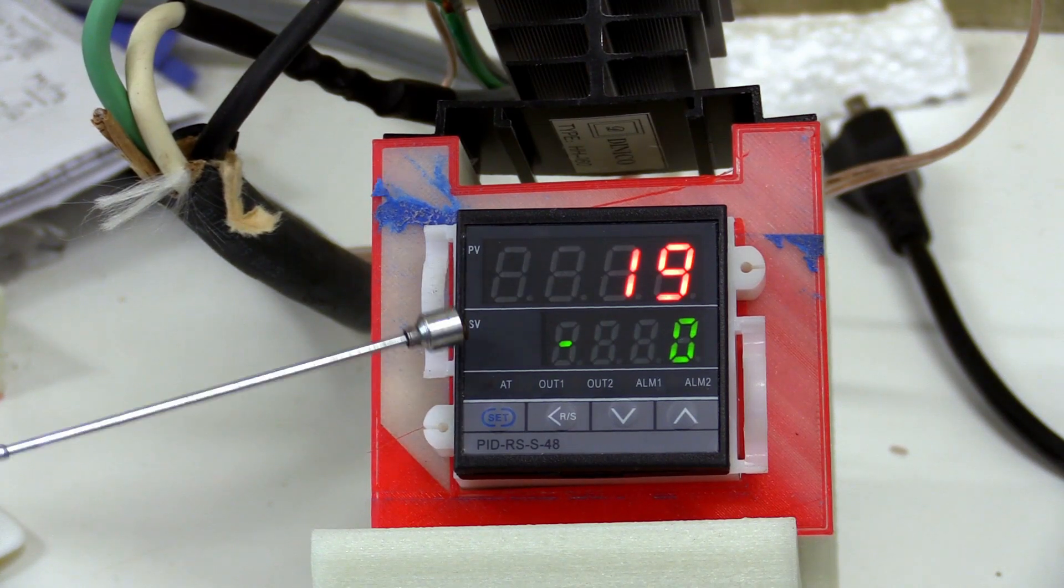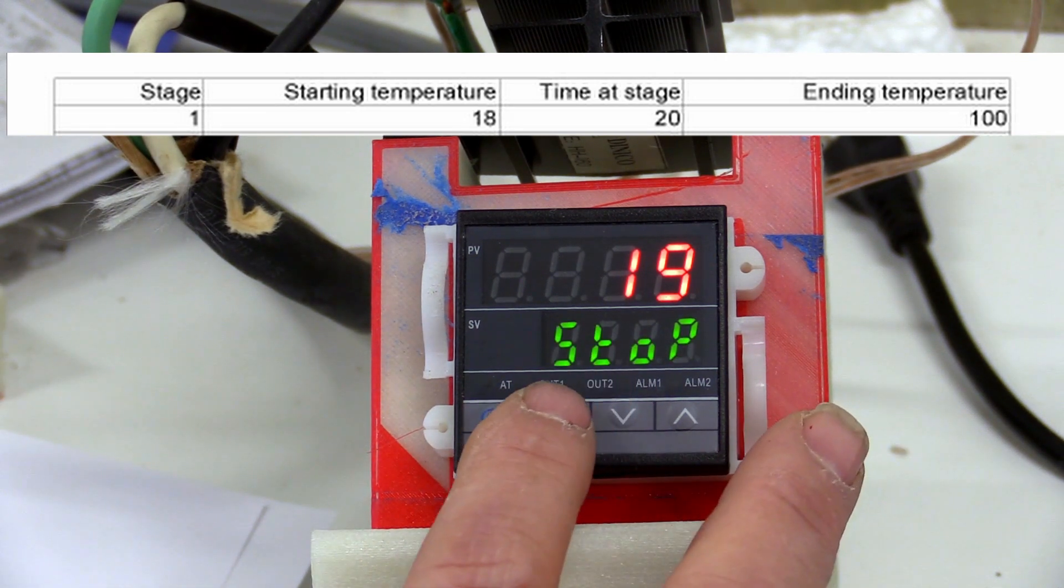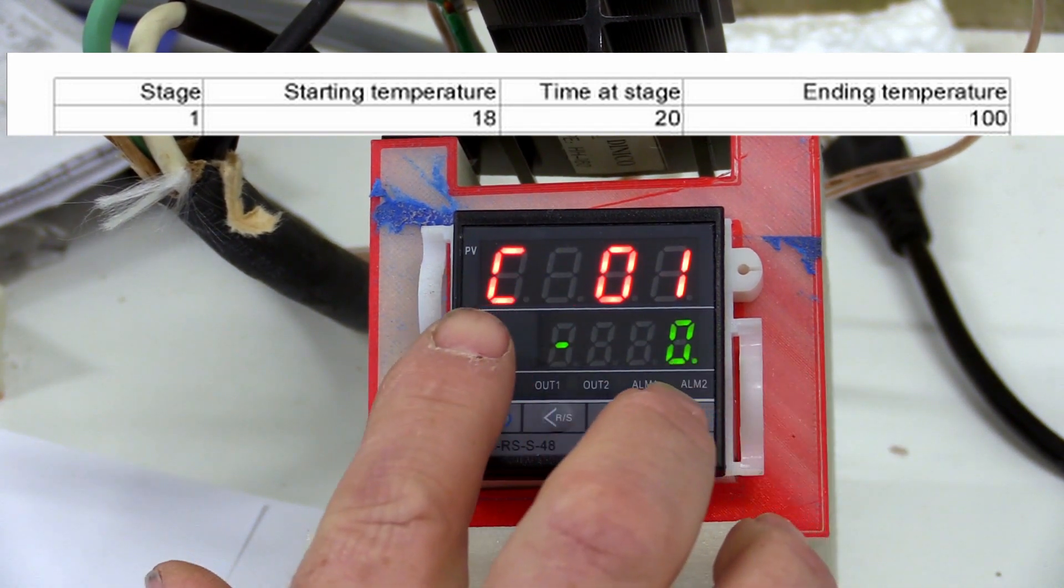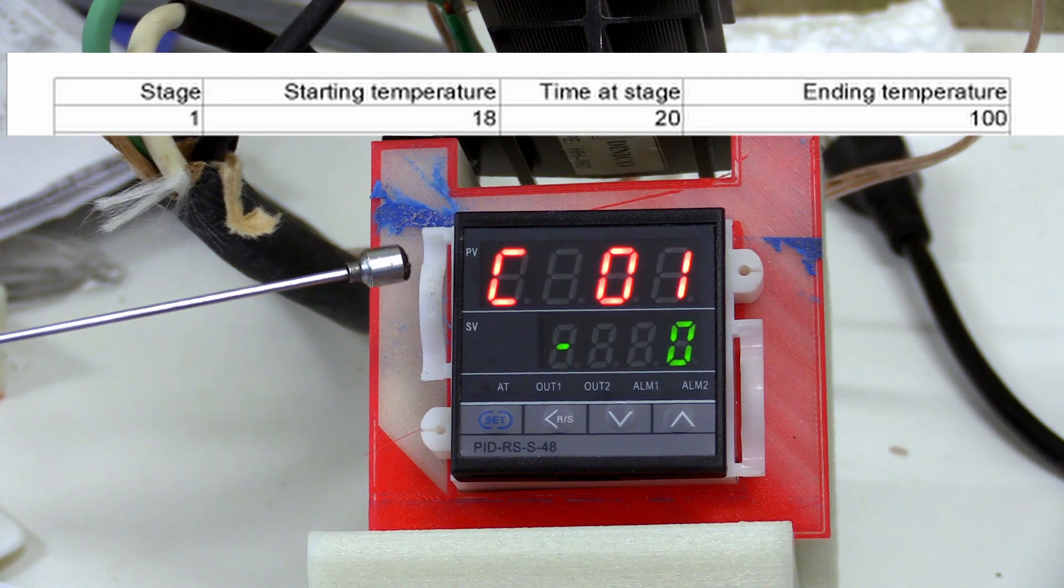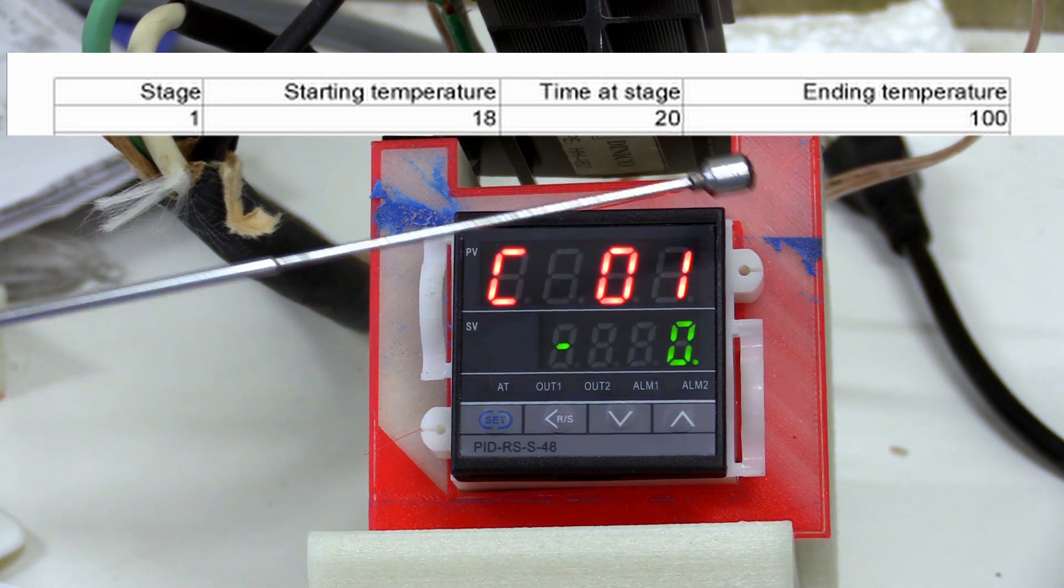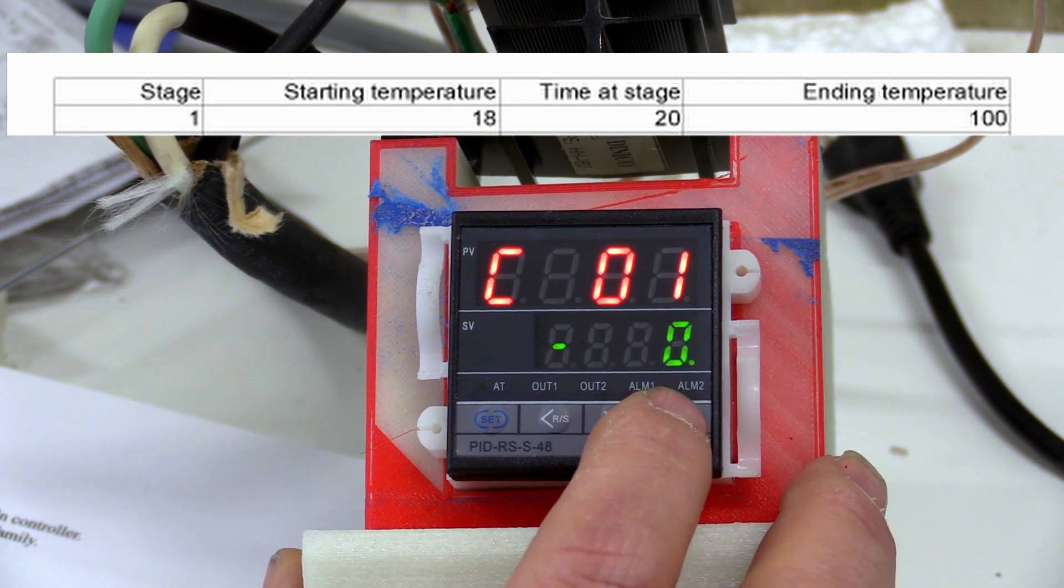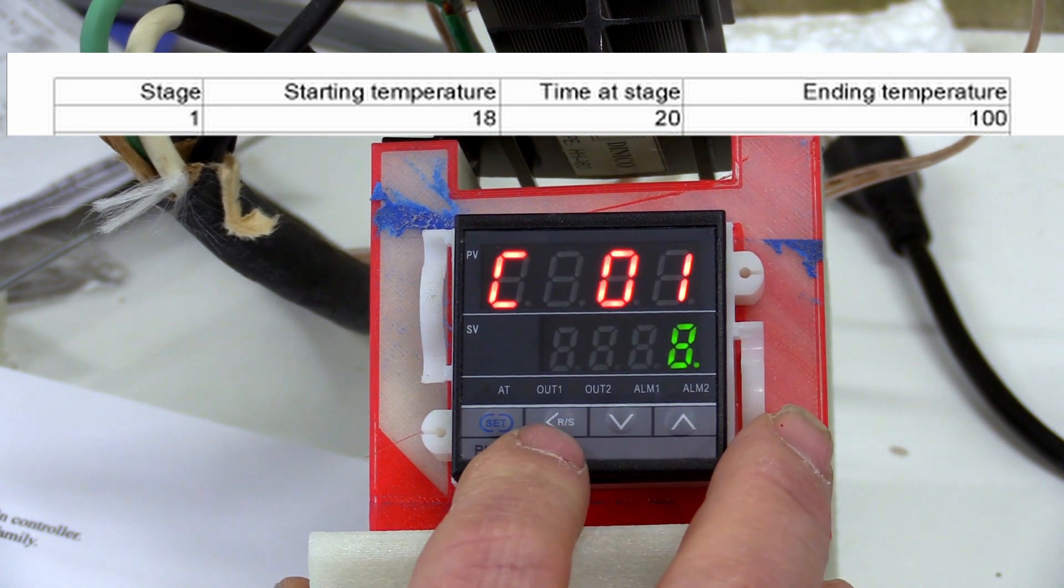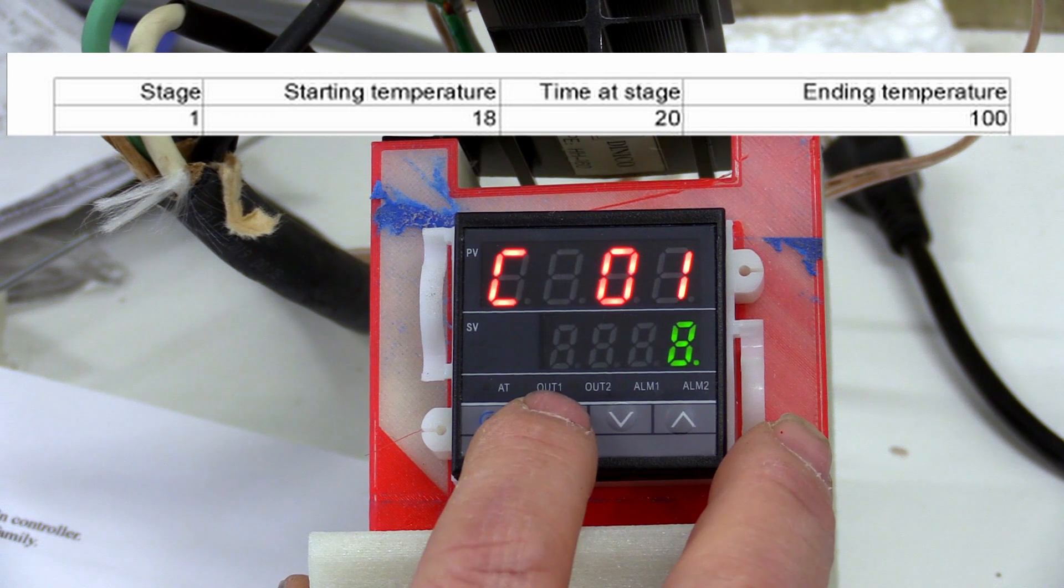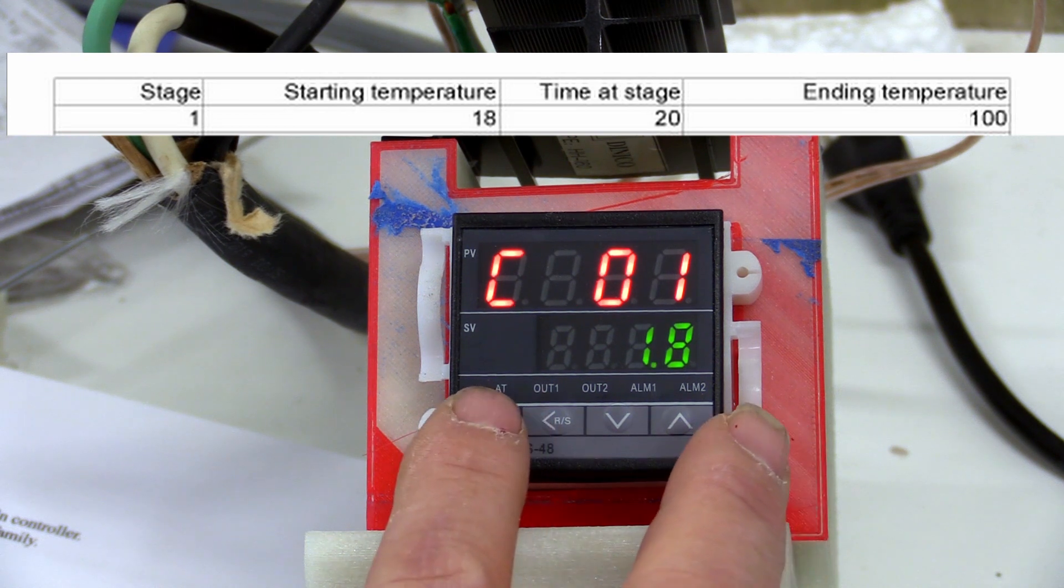To start programming, you press the left arrow. You will see C01. Think C stands for centigrade, and the 01 is the stage we're programming. The first stage starts at the ambient temperature of the controller. Get into the habit of programming each digit individually. You will choose which digit you're changing with the left arrow. Press the up and down arrows as needed to change the value of that digit. Once you're done entering the parameter, press set.